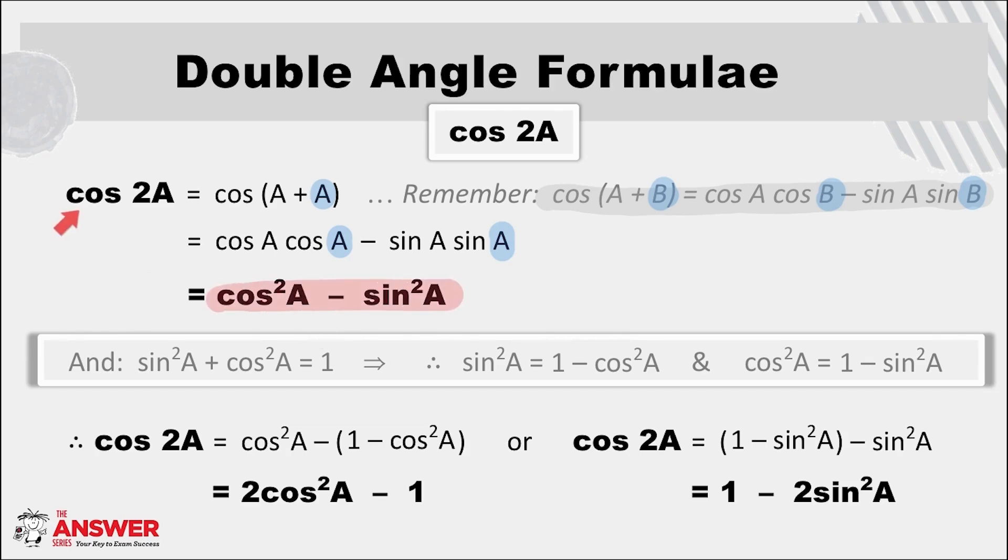So this is one expansion of cos of a double angle, but because of the squared terms we have the opportunity to use the squared identity to write this in different forms. A reminder here of the sine squared plus cos squared equals one identity and the different ways it can be used.